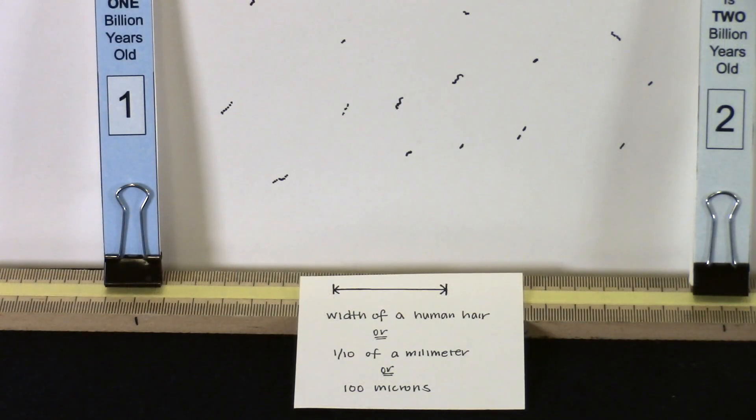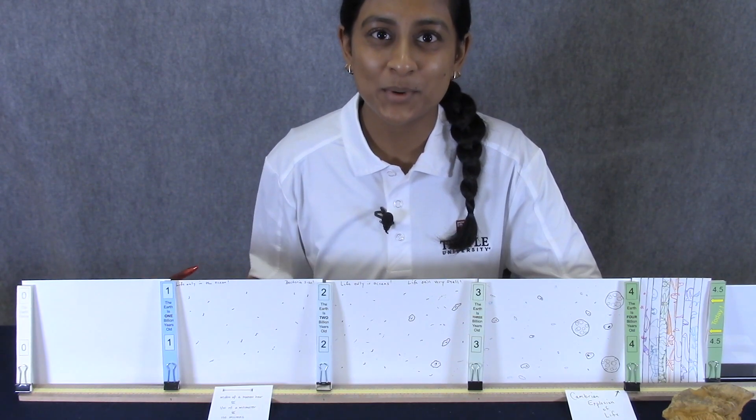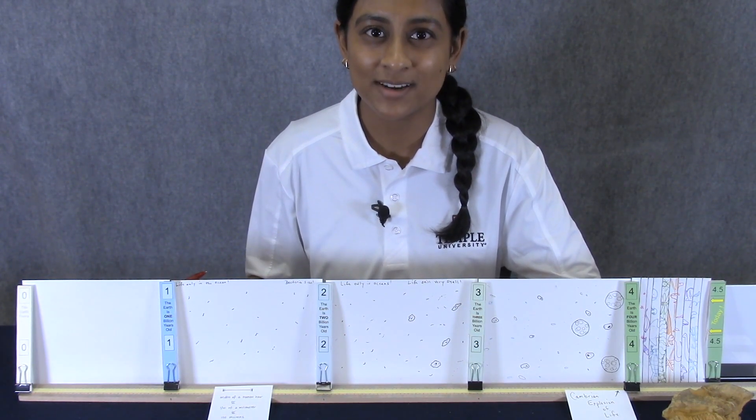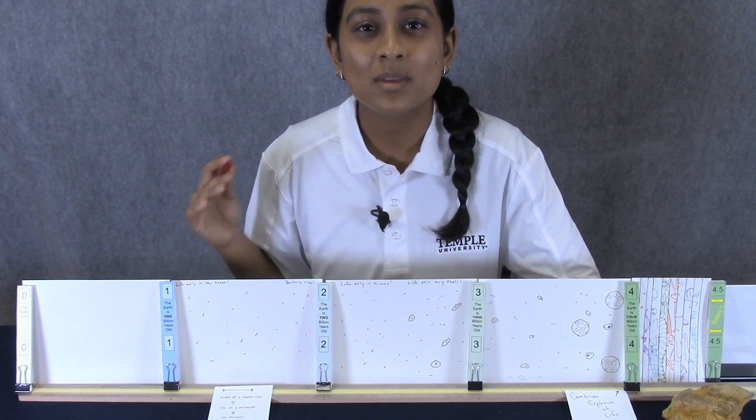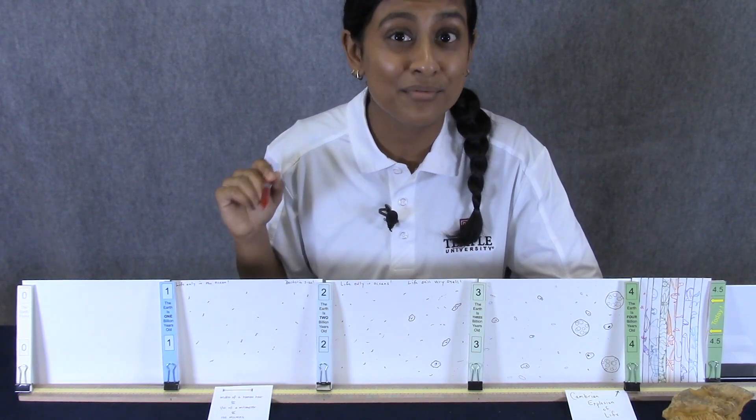So these fossils are about 1 to 10 microns big. All of this life is between 1 and 10 microns, and is very similar to bacteria cells that are all over our Earth today. So the only life on Earth back here was in the ocean, and very small.